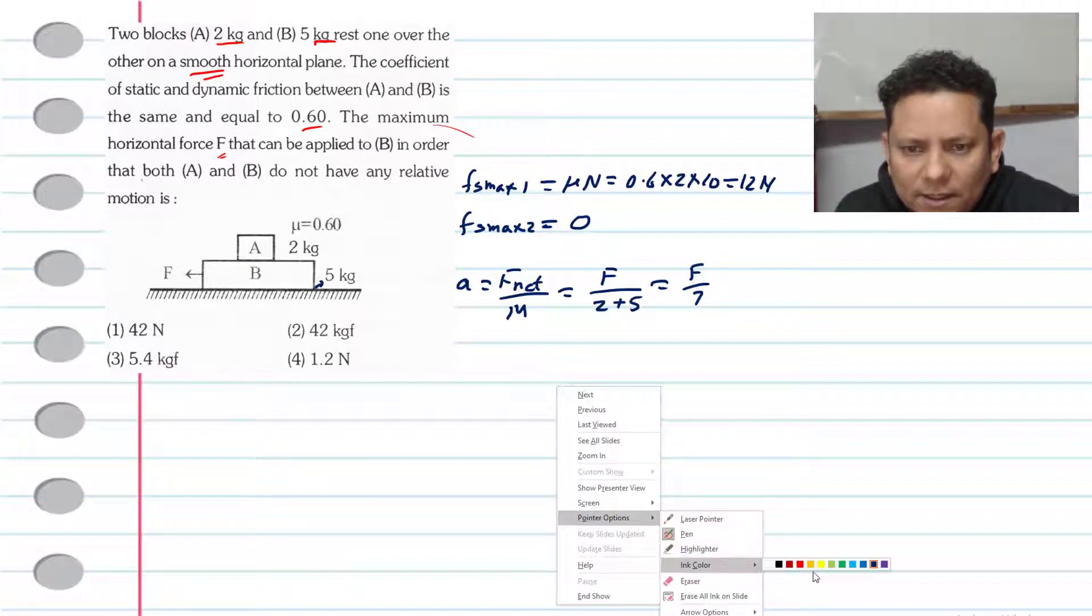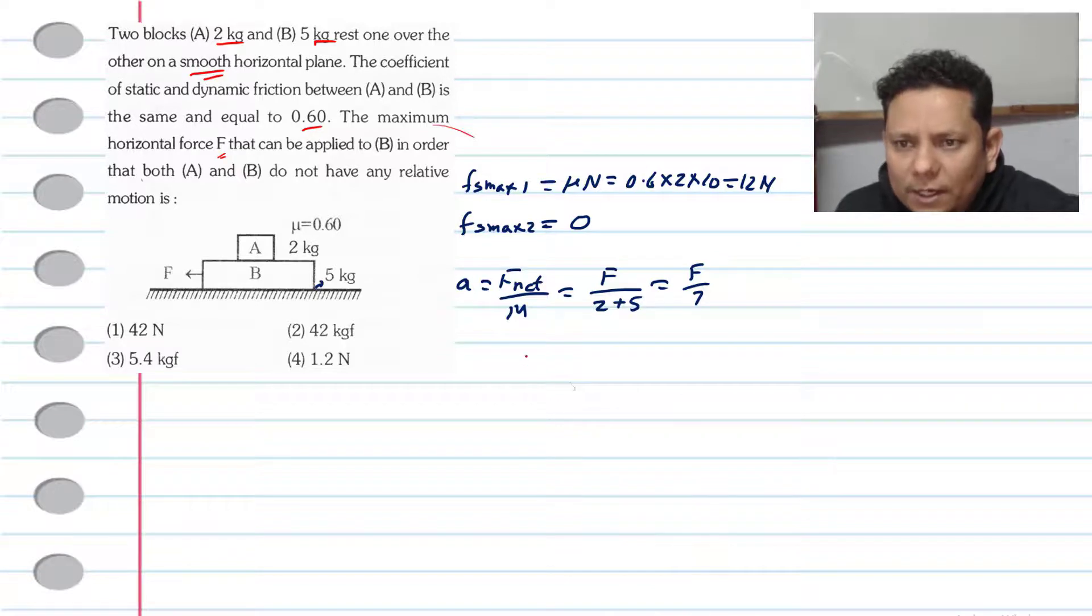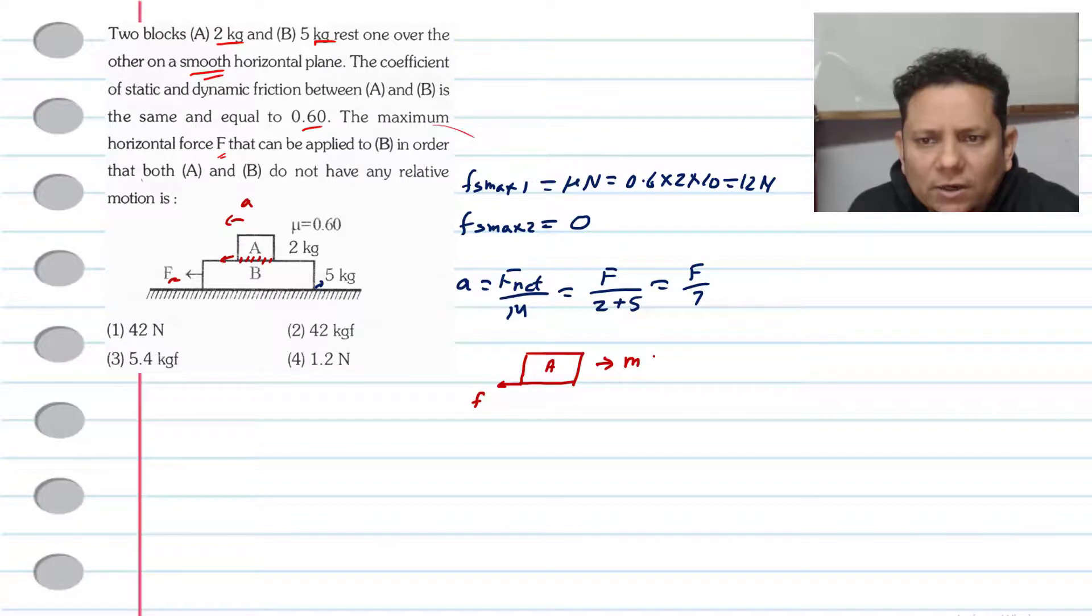To understand the problem: block A is on top of block B. If we apply external force F to B in this direction, then A also accelerates in this direction. The friction force between A and B makes them move together. For the A block, the friction force equals ma, which is the mass multiplied by the acceleration.